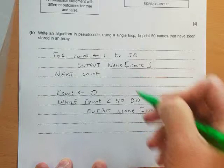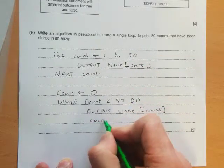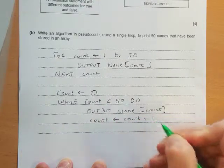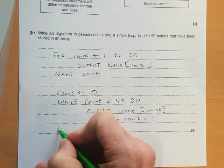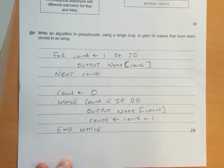We could call that whatever you want—name, names. So we need to add one to the count here: count equals count plus one. And then we'll end the while loop.